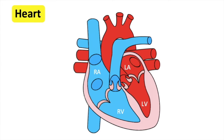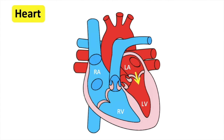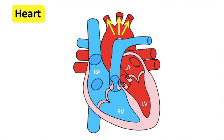At the same time, oxygenated blood from the lungs enters the heart through the left atrium via the pulmonary veins. The left atrium contracts and blood then flows through the mitral valve into the left ventricle. The left ventricle contracts and oxygenated blood flows up through the aortic valve into the aorta. This blood is then sent around the body via arteries.